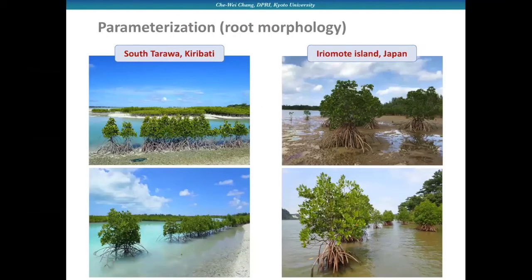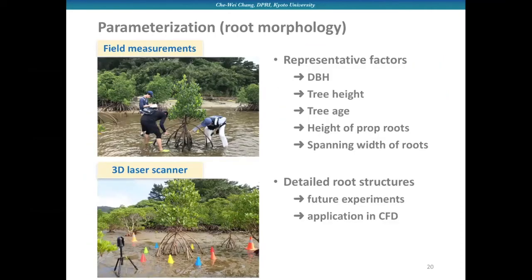I would like to briefly show you the field work we are currently conducting. In the past year, we conducted several field surveys in different areas, both forested and natural mangrove areas. In our field work, we measure the characteristic parameters of mangrove root morphology, like tree height and representative diameters. We also use a 3D laser scanner to capture the detailed structures. We are trying to establish a more comprehensive parameter data set which can be used in future numerical modeling. We still have a lot of work ongoing and hopefully we will be able to present all of them in future conferences or publications.